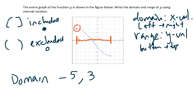When I look at the negative 5, it comes from this filled in circle, so that means I'm going to put a bracket there. And when I look at the 3, it comes from this open circle, so it's going to get a parentheses.